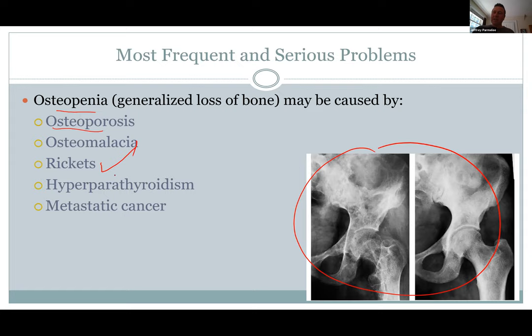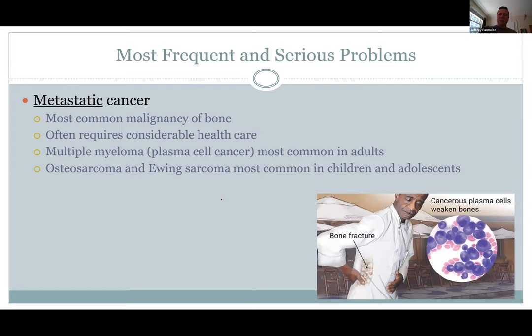Rickets and osteomalacia occur when bone doesn't ossify enough — maybe we don't have enough vitamin D, or not enough calcium and phosphorus. If your parathyroid gland has a tumor on it, you have hyperparathyroidism — too much parathyroid hormone, too much breaking down of bone. And of course bone cancer can eat away at your bone. There is osteosarcoma that actually originates in bone, but normally if you have bone cancer, it's metastasized from somewhere else — colon cancer or some other cancer that found its way to the bone through the blood supply. It's like the liver — a good place for metastases to start growing.